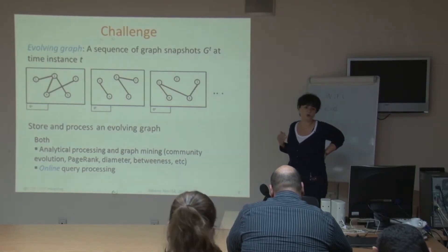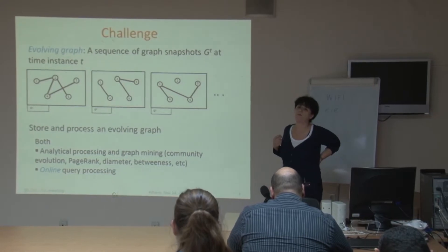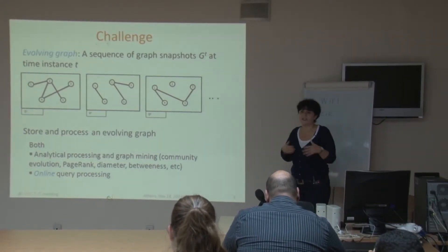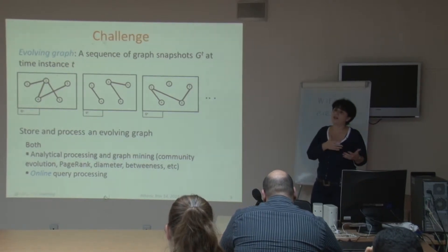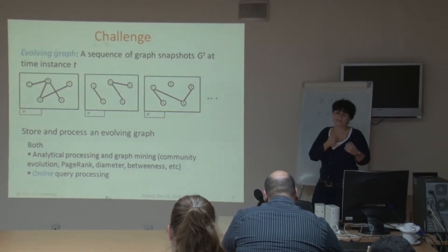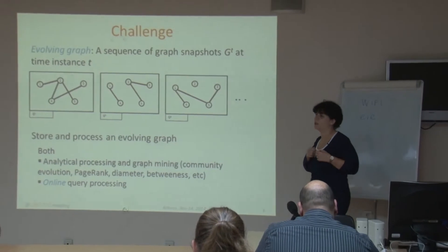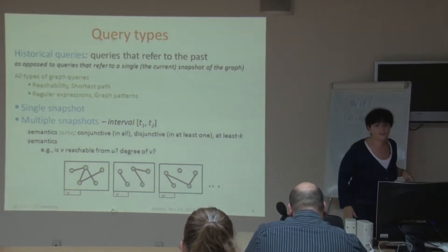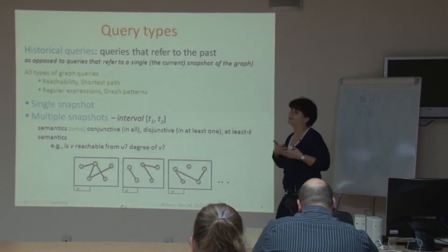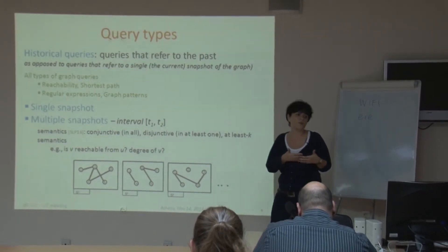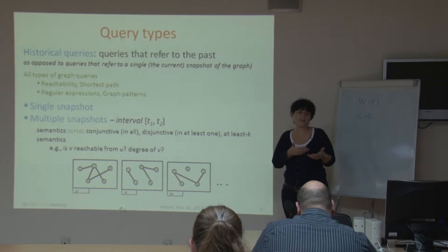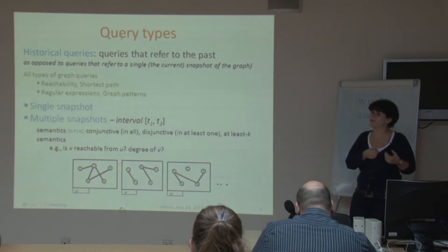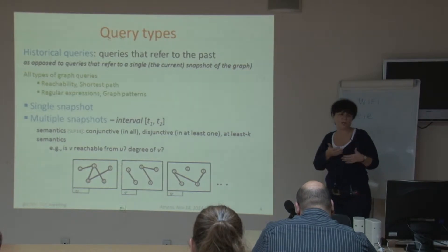This applies both to analytical processing and graph mining algorithms, including community evolution, PageRank, and computing diameters. But here I will focus on online query processing. So far we have queries that refer only to one snapshot — the current snapshot. Historical queries are queries that refer to the past, and we can have different kinds of historical queries, just as we have normal queries on graphs.